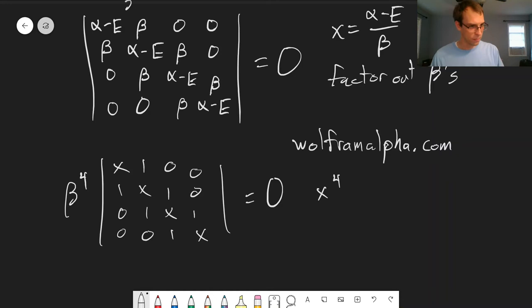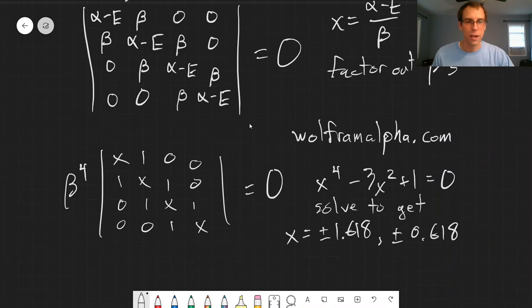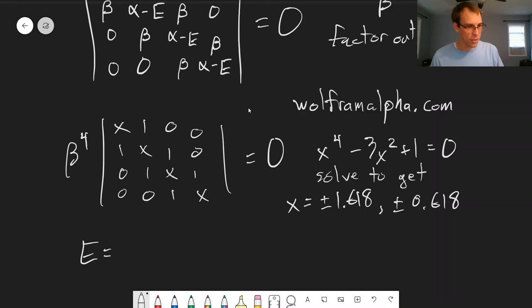In this particular case, I've got my solution written here. We get x to the fourth minus 3x squared plus 1 equals zero. We can solve that polynomial to get x, there's four different solutions. x can equal plus or minus 1.618, or plus or minus 0.618.